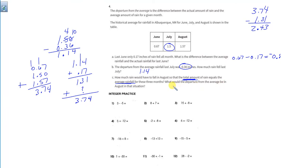All right, so that's our first part of this answer, 2.43 inches. What would be the departure from the average in August in this situation? It's over what we typically get historically. Our job is to find out how much over.